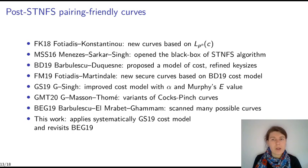Since the introduction of the TNFS algorithm in 2015, new key sizes and new pairing-friendly curves were proposed. So for example, by Fotiadis and Konstantinou, so they based their key size on the asymptotic complexity. By Menezes, Sarkar, and Singh. So they started to open the black box of the STNFS algorithm and look more deeper than just the asymptotic complexity to try to refine the key size. Then Barbulescu and Duquesne proposed a model of cost and refined the key size and also proposed seeds. Fotiadis and Martindale also proposed new curves based on the Barbulescu-Duquesne model of cost of discrete logarithm computation.